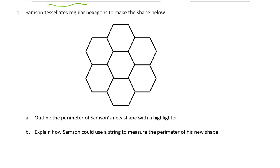Samson tessellates regular hexagons to make the shape below. Outline the perimeter of Samson's new shape with a highlighter. I'm going to use a yellow highlighter. Perimeter is the distance around the outside of the shape. You shade in the area inside but you trace around the outside of the perimeter, or outline it. Okay, that's A.